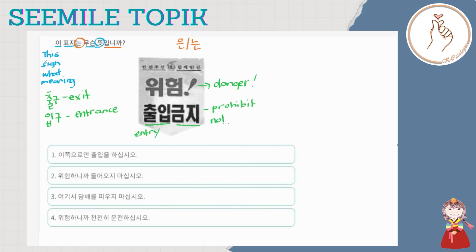Not allowed. So, since it's dangerous, no entry. Tingnan natin yung sinasabi sa number 1: ICHO GUROMAN CHURIBUL HASHIPSHIO. So ICHO — isa-isahin ulit natin — ICHO means 'this way.' And then CHURIP — again, same sila — yung entry.